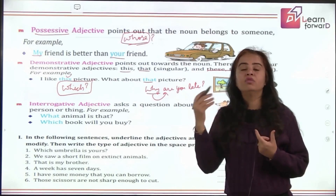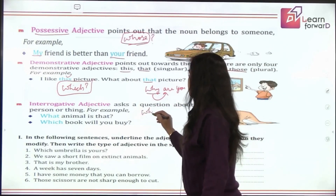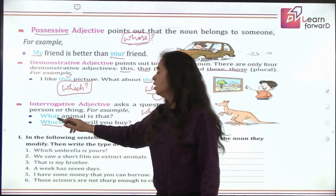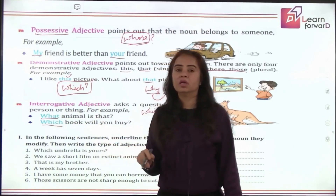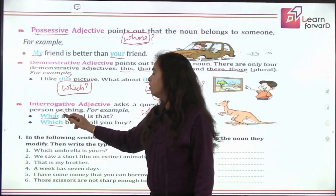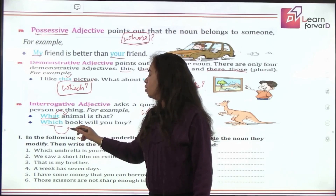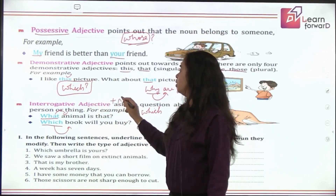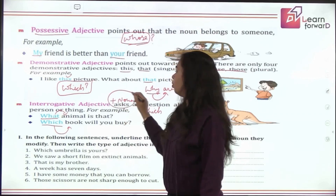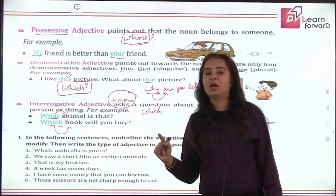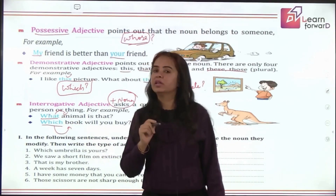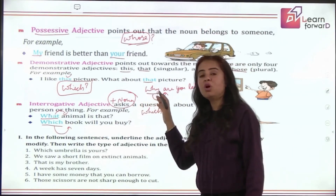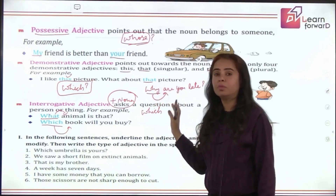For example: 'Which book will you buy?' — 'which' is the question word, and 'book' is a noun right after it. 'What animal is that?' — 'what' is the question word, and 'animal' is the noun. So when interrogative words are immediately followed by a noun, your question word is an interrogative adjective. 'Why are you late?' — the question word is not followed by a noun, so it will not be an interrogative adjective.